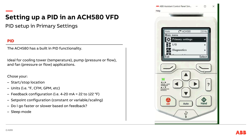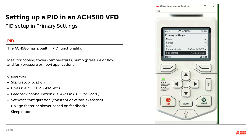First I'm going to go into menu, go into primary settings, and scroll down to PID control and select there. Now I have my first decision: do I want to use the PID assistant where the drive asks me questions, or do I just want to go down the list and answer that information through the list below? I usually do that second option — I find it easier to just go through and select what I need to adjust.